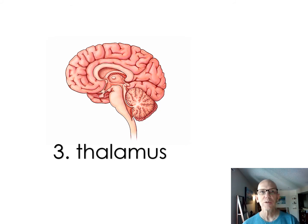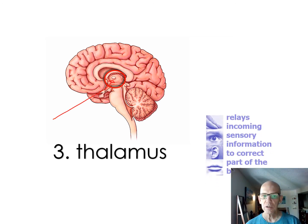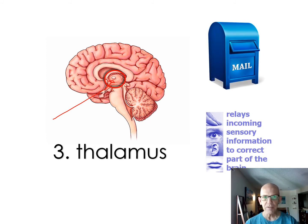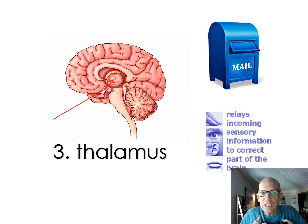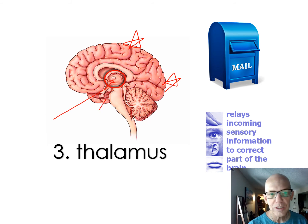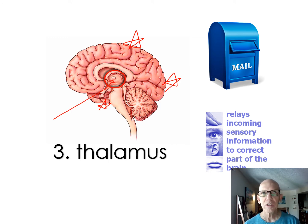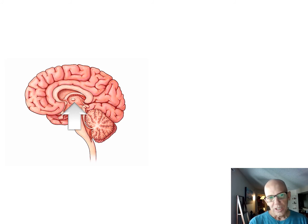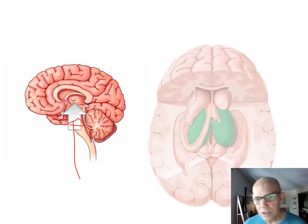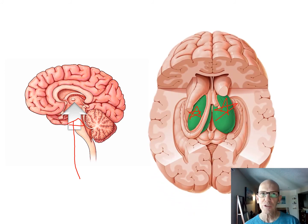Parts three, four, and five are much easier. Part three is right in the middle — I call it the mail room. All the sensory information coming in to your brain stops off at this mail station, and then it gets sorted: vision goes to the occipital lobe, temperature, touch and taste go up to the parietal, hearing and smell come to the temporal. This is the thalamus.